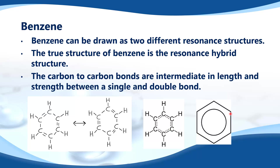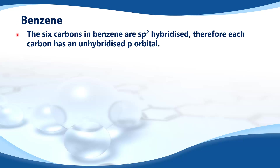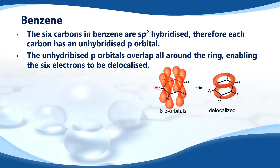Benzene is often represented with a ring in the middle to show that it has delocalized electrons. Next we look at the bonding in benzene. The six carbons in benzene are sp2 hybridized, therefore each carbon has an unhybridized p orbital. The unhybridized p orbitals overlap all around the ring, enabling the six electrons to be delocalized.